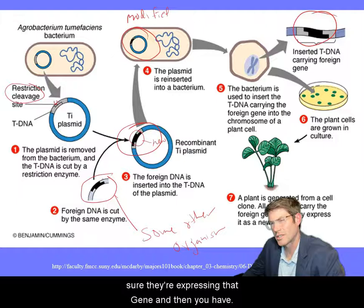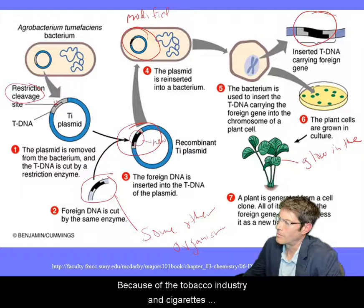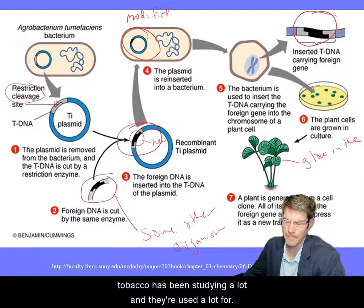That special plasmid has to enter the nucleus and establish itself within the chromosome. Then they'll grow the plant in small cultures to make sure it's expressing that gene — and then you have a modified plant. The most famous example would be glow-in-the-dark tobacco, because tobacco has been studied a lot due to the cigarette industry.